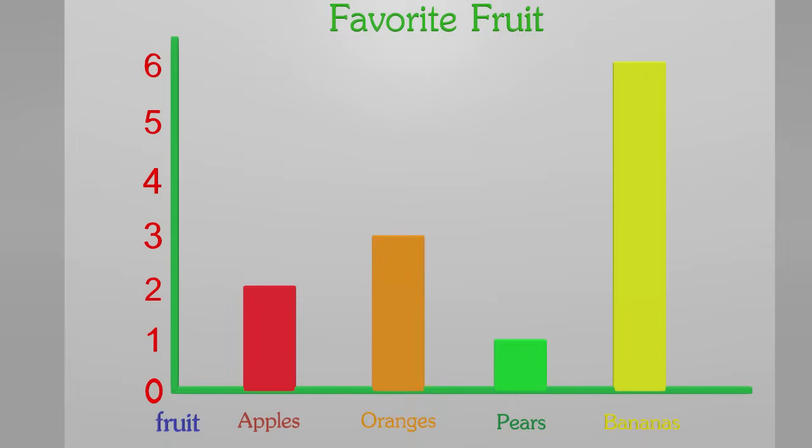We now have an amazing bar graph that shows all of our data that I collected about what is the favorite fruit to eat. With this graph, it is easier to read and interpret the information. For example, I can see that only one person liked pears. Now that's interesting.